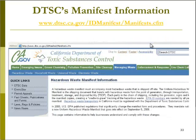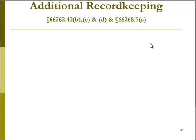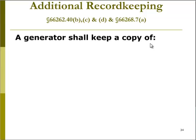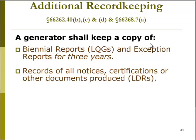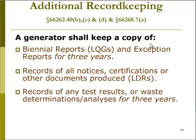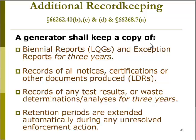Additional information about hazardous waste manifests can be found at the DTSC website. Record keeping summary: a generator of hazardous waste shall keep copies of biennial reports (required for RCRA large quantity generators), exception reports, records of all notices, certifications, and other documents produced including land disposal restrictions, and records of any test results or waste analysis — all for three years. Record retention periods are automatically extended during any unresolved enforcement action.